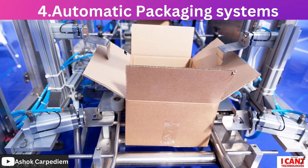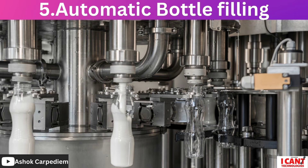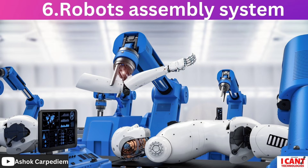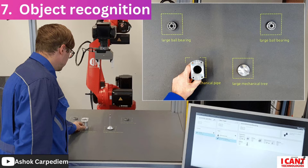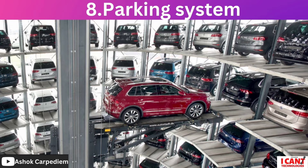The next example is the automatic packing system. When something needs to get packed, there's no need to change so many programs — maybe only the maximum size matters. That's why it is also a fixed automation. Other examples include automatic bottle filling, robot assembly systems, object recognition, and parking systems.